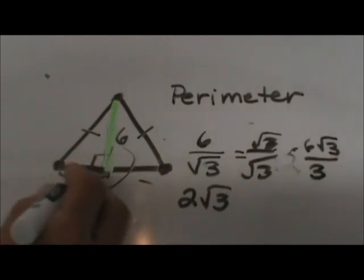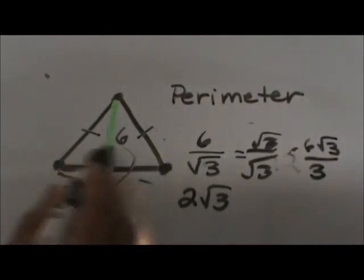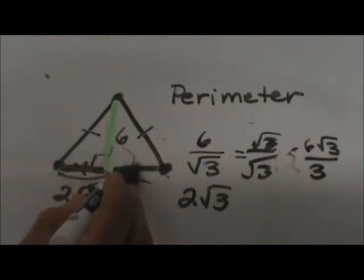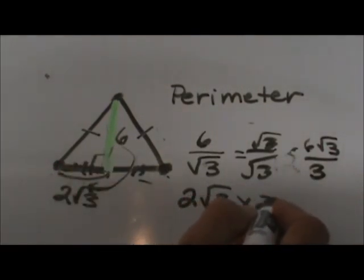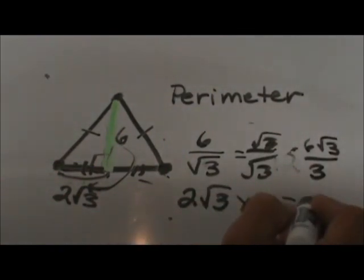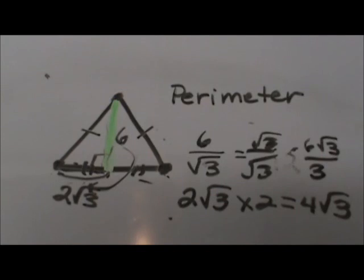So that is the length of this portion of the side. Now we know that's half of the length of one side so I'm going to take that and multiply it times 2 and that gives me 4 square root 3. So that means the side is 4 square root 3.